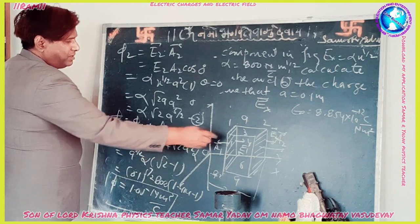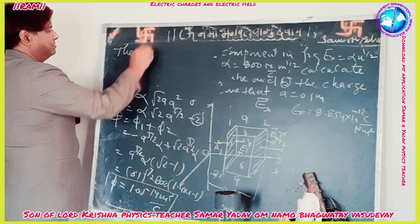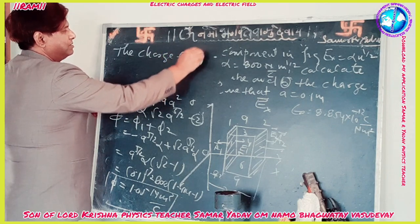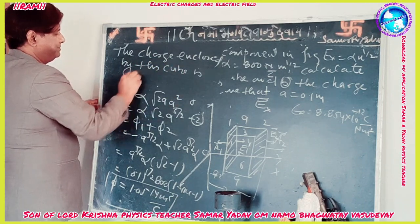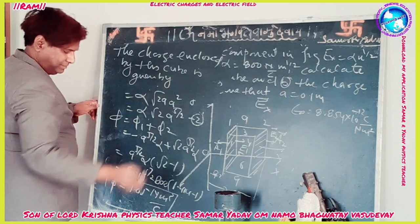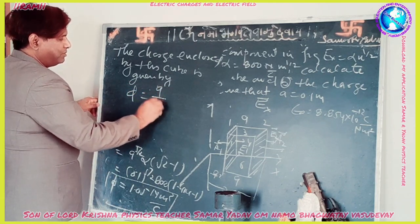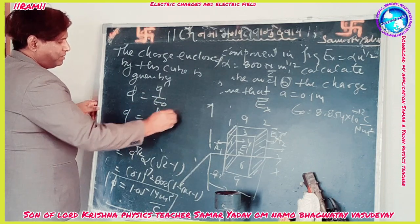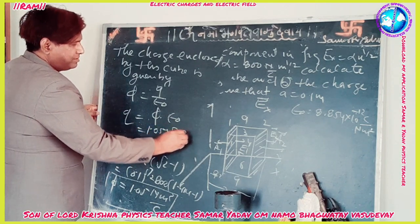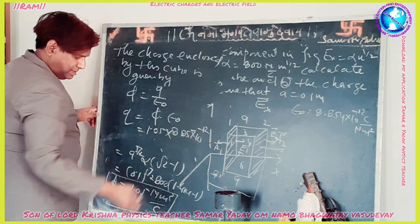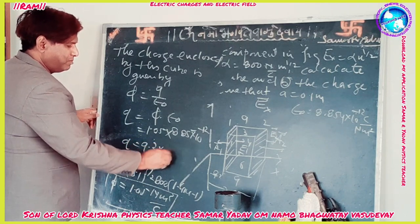The charge enclosed within the cube is given by Gauss's law: phi equals q upon epsilon-zero, therefore q equals phi times epsilon-zero. Phi is 1.05 and epsilon-zero is 8.85 times 10 to the power minus 12. Simplifying, we get charge q equals 9.3 times 10 to the power minus 12 Coulombs.